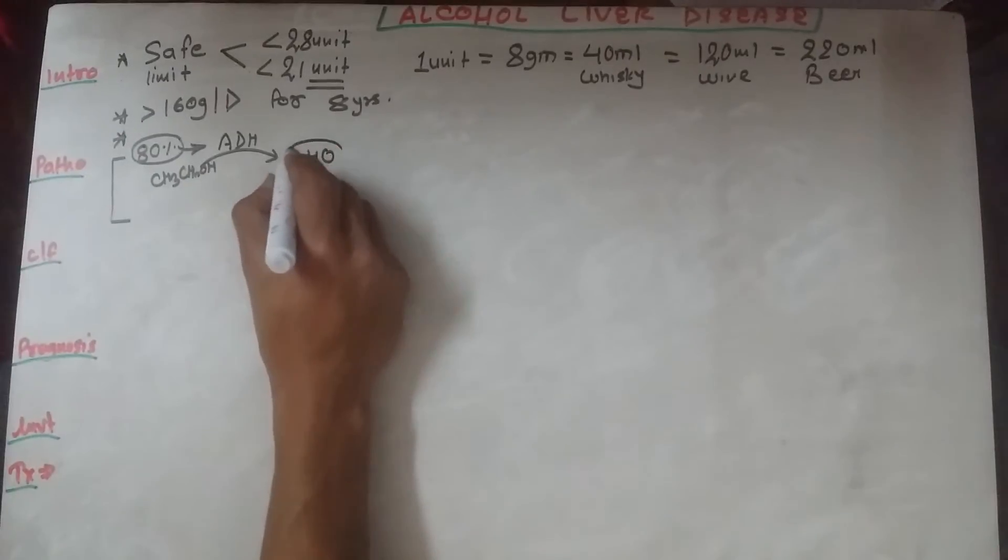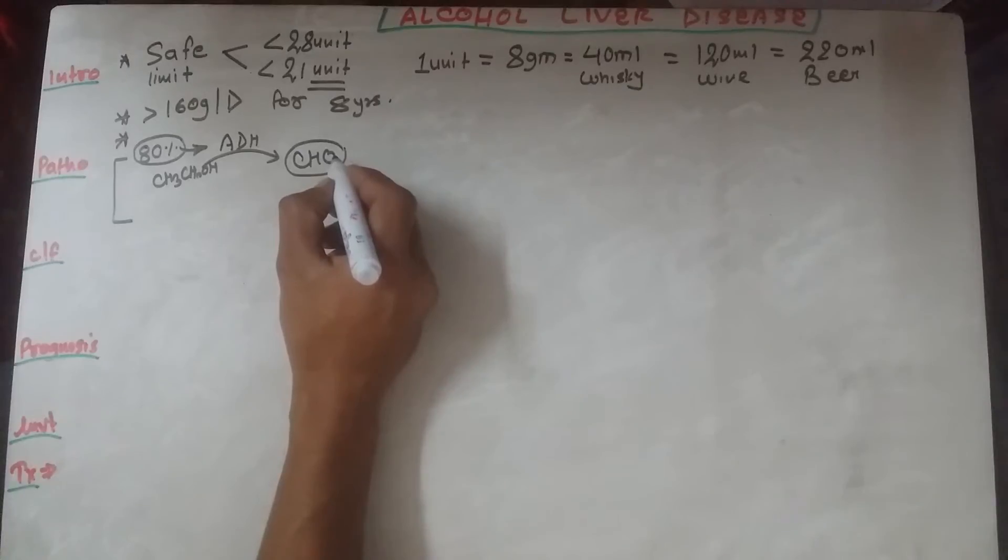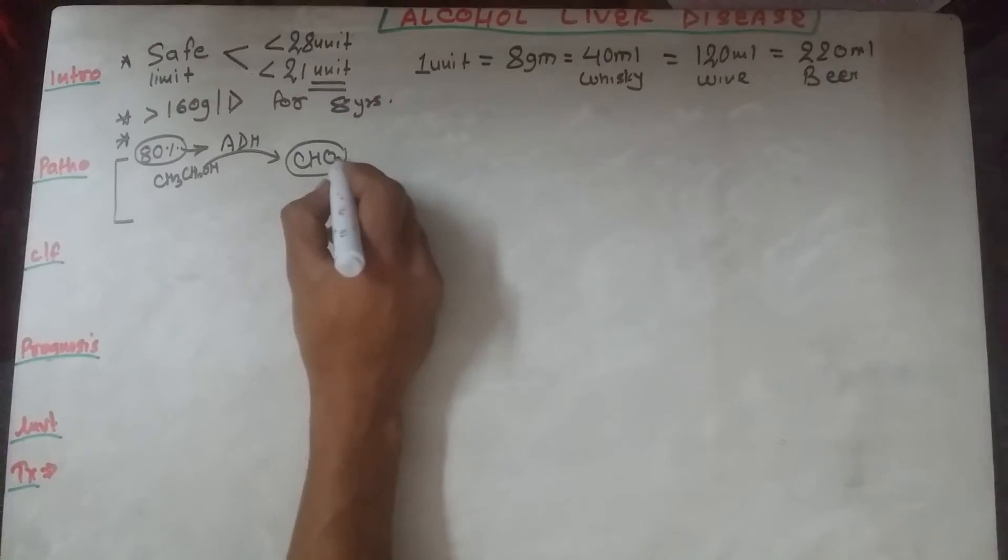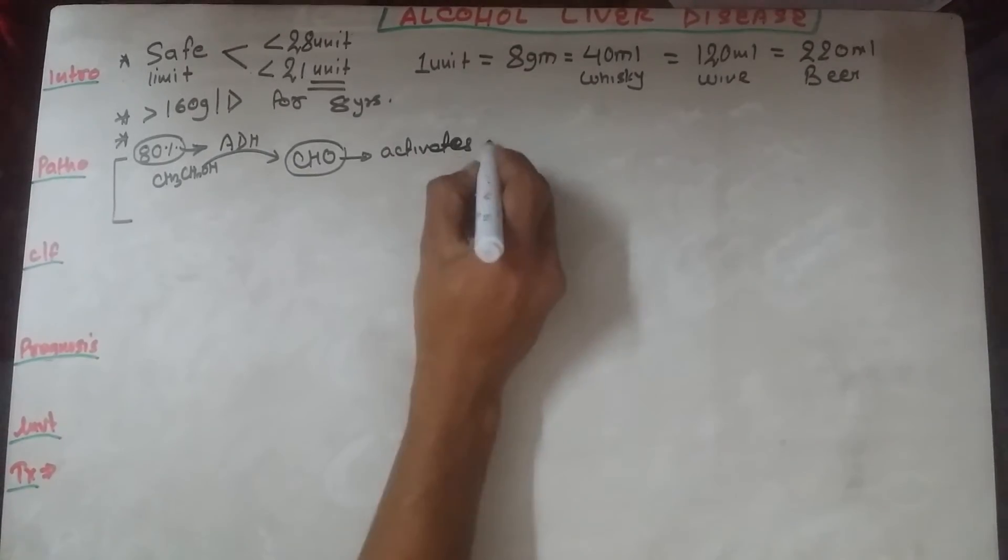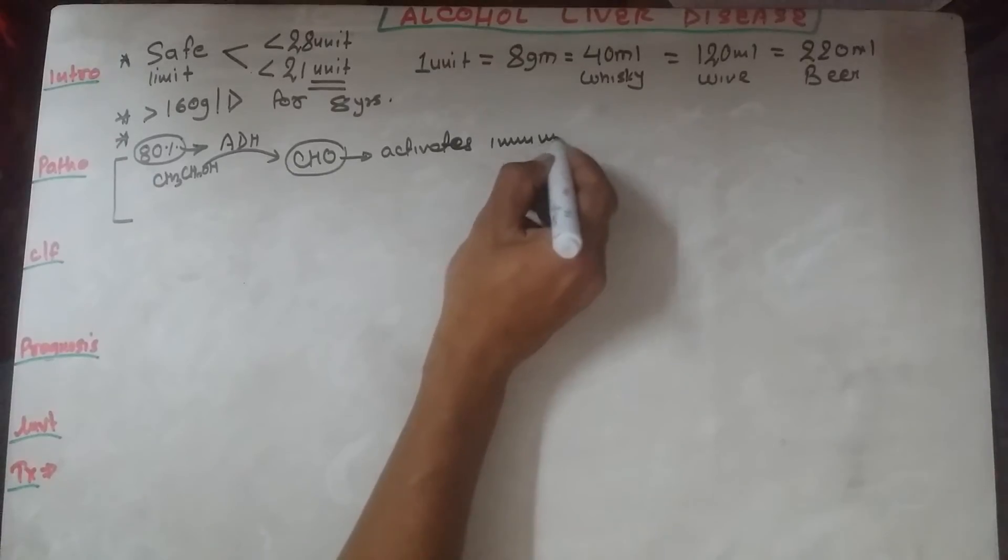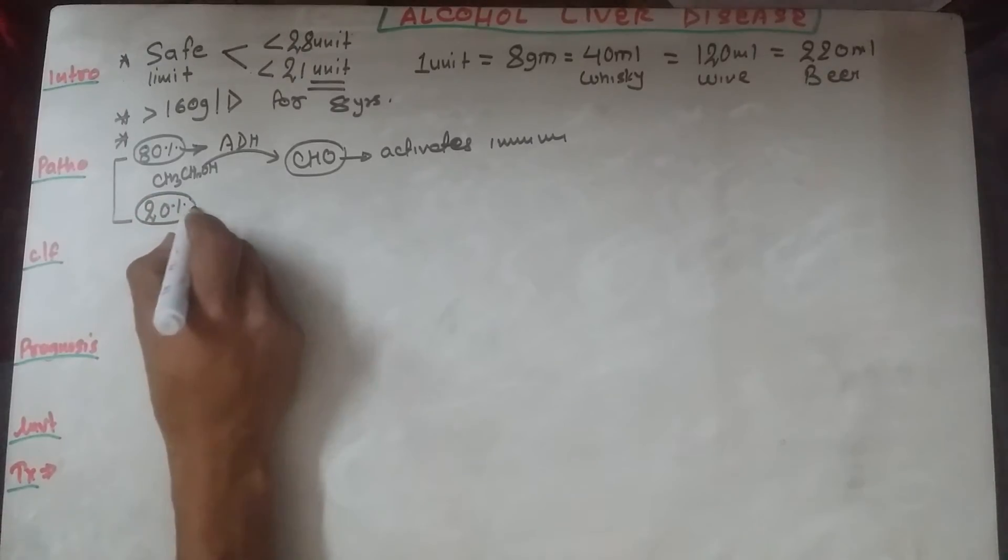This alcohol dehydrogenase changes CH3CH2OH, and this acetaldehyde group has the capacity to adhere with cellular proteins. This has the ability to modulate the immune system.